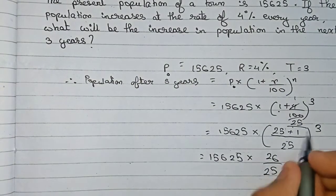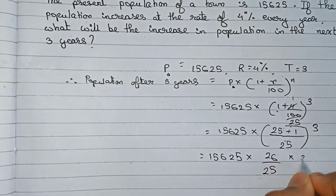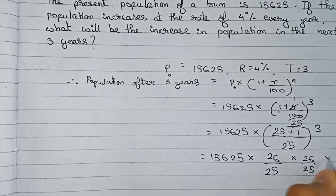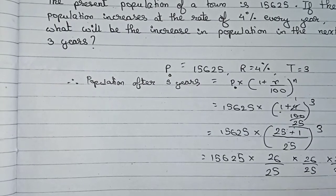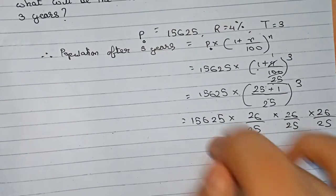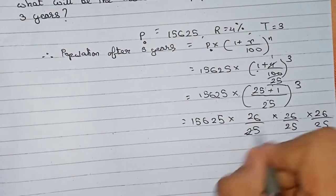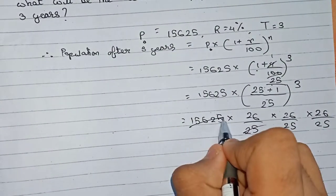And this number will be written three times as it is to the power 3, so that's 26/25 × 26/25 × 26/25. So first, cut 25, and these numbers will go directly.